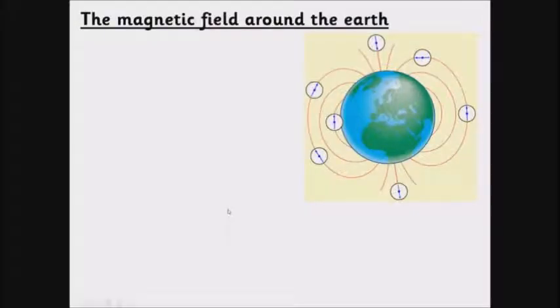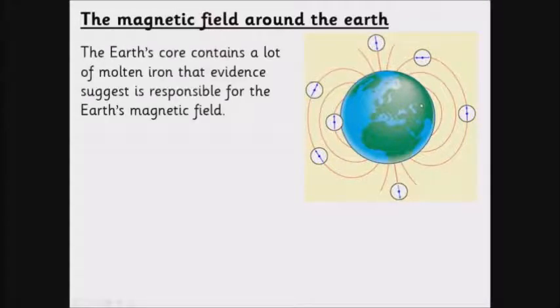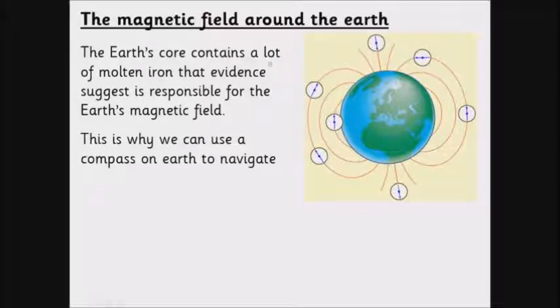Now we've mentioned the Earth's magnetic field. The Earth does have a magnetic field around it. This diagram shows you it. These compasses are pointing in the direction of the magnetic field. Where does this come from? Well, the Earth's core contains a lot of iron, and this is what's suggested. This is the evidence that is responsible for the Earth's magnetic field. This is how we can navigate. Compasses would be useless if our planet didn't have a magnetic field.